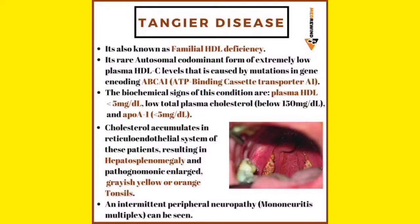Why does this happen? It is an autosomal dominant disorder which occurs because of a gene mutation. The name of the mutated gene is ABCA1 — ATP Binding Cascade Transporter A1. Remember the name of this gene, because sometimes they ask: in Tangier's disease, which gene is responsible? The answer is ABCA1.